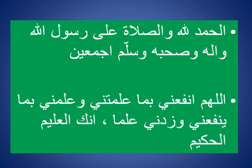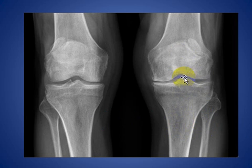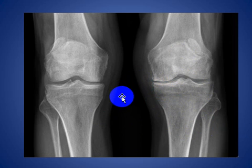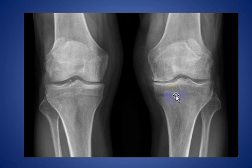I will represent a musculoskeletal case. As you see here, this is an X-ray of both knees in the AP position. We can see degenerative joint disease involving both knees, more on the left side, with some osteophytosis. There is no definite malalignment noted.